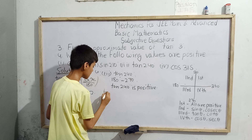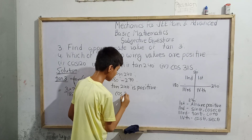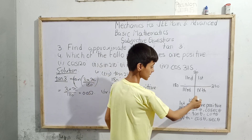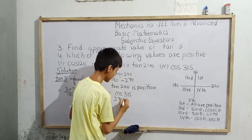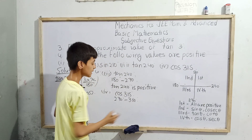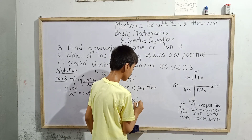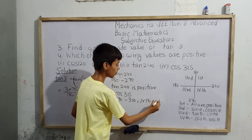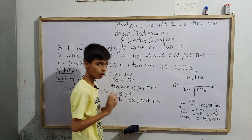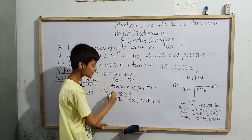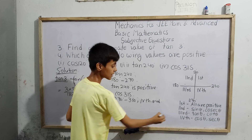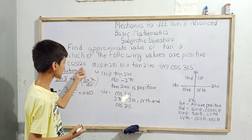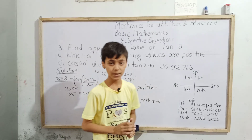Part (d): cos(315°). It lies between 270° and 360°, so it is in the fourth quadrant. In the fourth quadrant, cos and sec are always positive, while all other ratios are negative. Since this is cos(315°), cos is positive here, so cos(315°) is also a positive number. So the answers are: parts (a) and (b) are negative, and parts (c) and (d) are positive. Thank you.